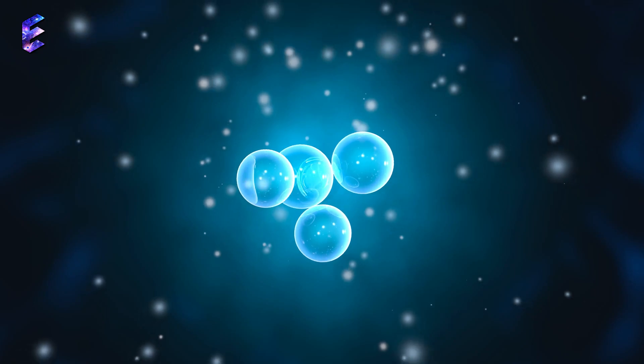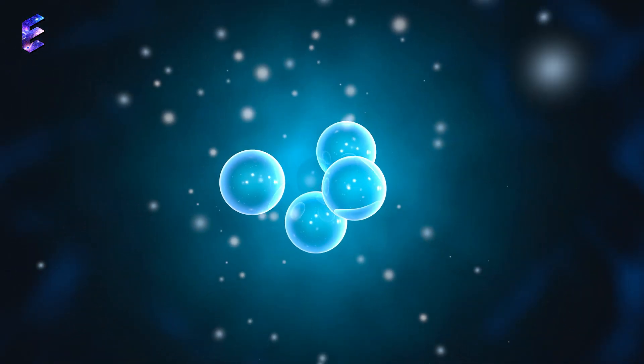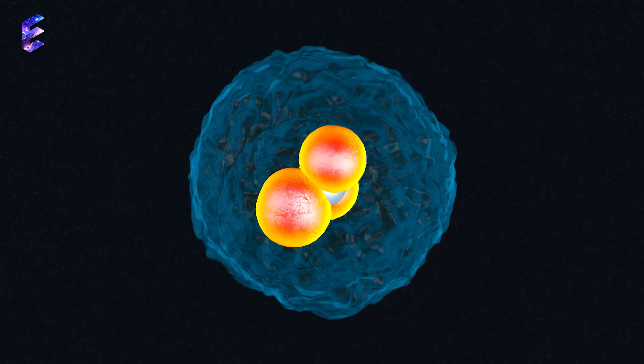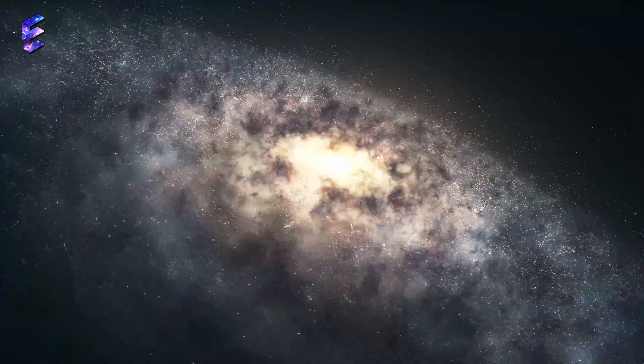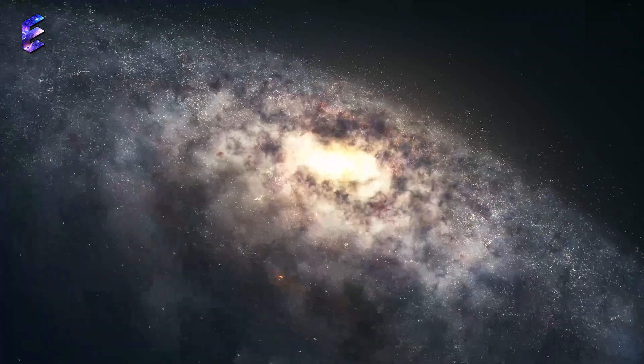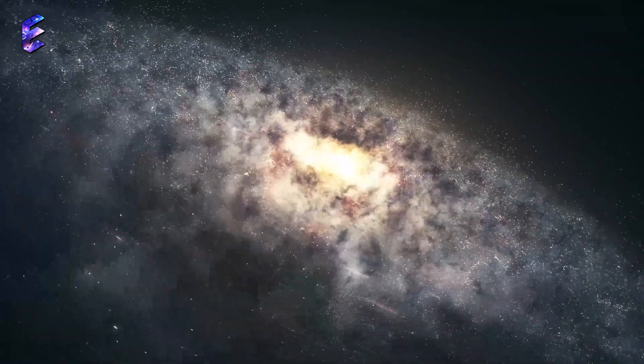First, the subatomic particles emerged, and over time, these particles combined to form atoms. Gravity then caused these atoms to clump together, forming galaxies, stars, and planets.